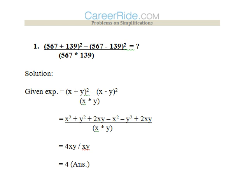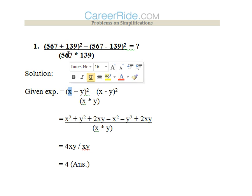The first question is: (567 + 139)² minus (567 - 139)², divided by 567 × 139. You can see two common terms, 567 and 139, all through the question. You would not solve this by direct calculation — that would be a very tedious process. Instead, replace 567 with x and 139 with y.